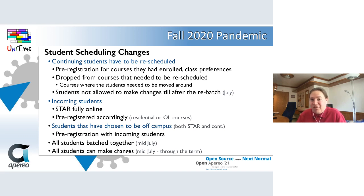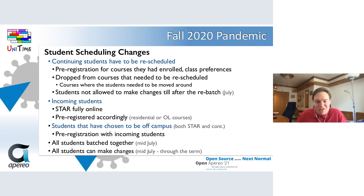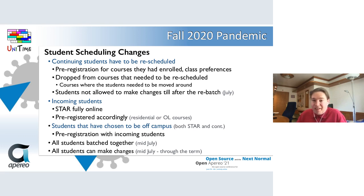Students registered based on whether they indicated they would come to campus or not. Students who decided not to come to campus were only allowed to take the OL online-only courses; those coming to campus picked up the regular residential courses. Students who decided to be off campus — both incoming and some continuing students — pre-registered only for online-only OL courses. All these students were batched together in mid-July using the UniTime Student Scheduling Solver, and were only allowed to make schedule changes after this was done, giving them a couple of weeks before classes started.